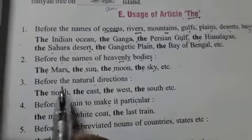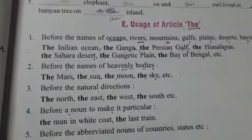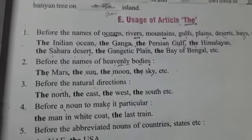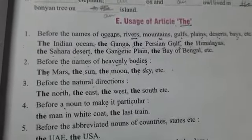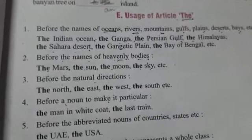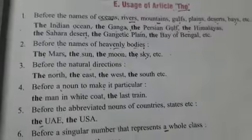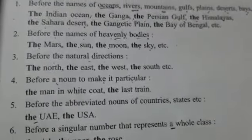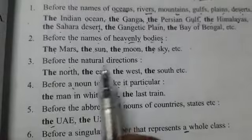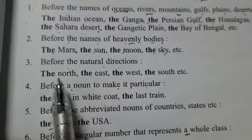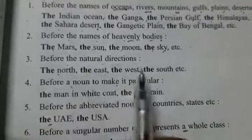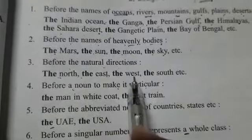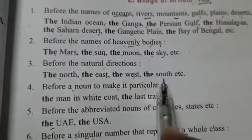Next is before the natural directions — joh hummari directions hai. There are four main directions: north, east, west and south. We will use 'the' before them: the north, the east, the west, the south.